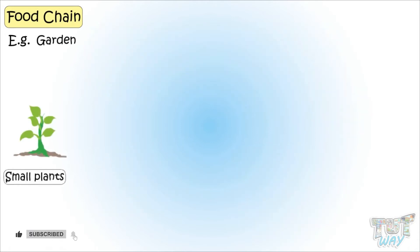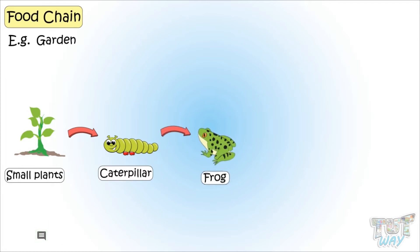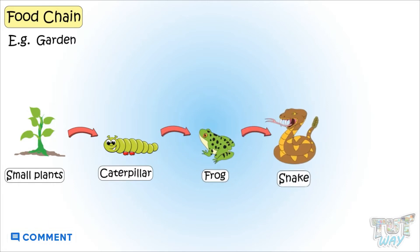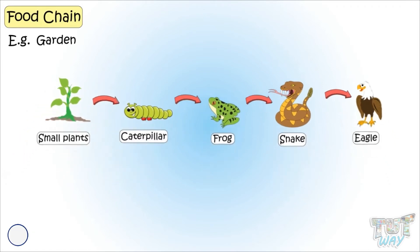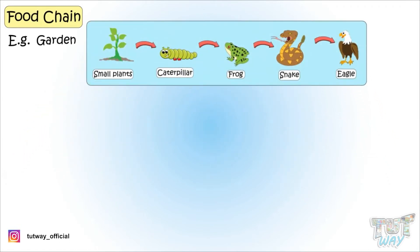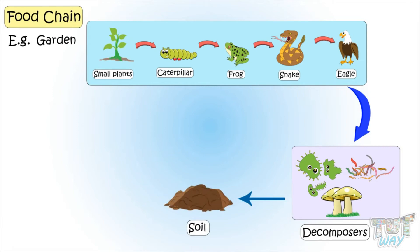Now let's have a look at another example. Grasses, small plants, and flowers are eaten by caterpillars. The caterpillar is eaten by the frog. The frog is eaten by the snake. And the snake is eaten by an eagle. And when the eagle, snake, frog, and caterpillar all are dead, microorganisms like bacteria and fungi decompose the dead animal waste into nutrients that become part of the soil. And those nutrients are again used by plants to grow and make food.